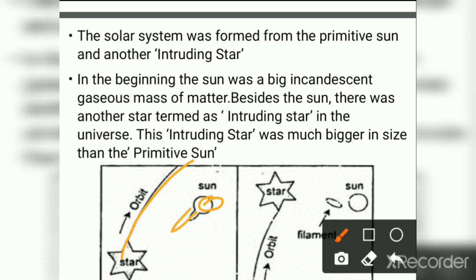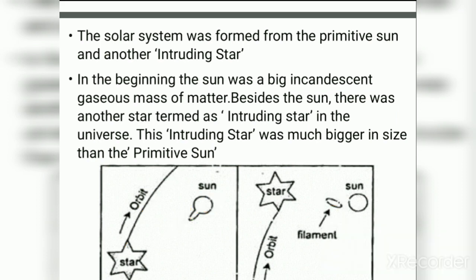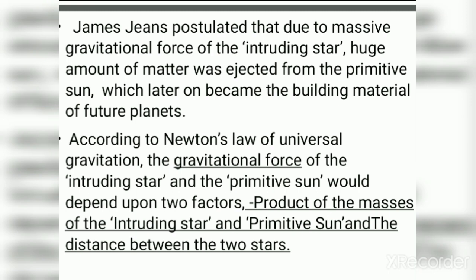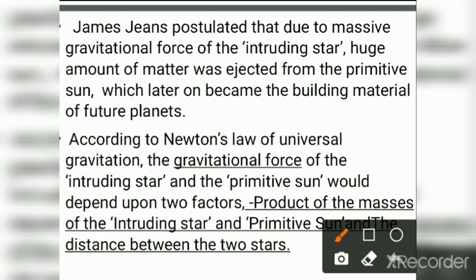This tidal force caused a tide to separate from the Sun as a filament. Jeans postulated that due to the massive gravitational force of the intruding star, a huge amount of matter was ejected from the primitive Sun, which later became the building material of future planets. According to Newton's Law of Universal Gravitation, the gravitational force depends upon the product of their masses and the distance between the two stars.